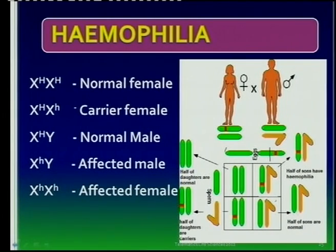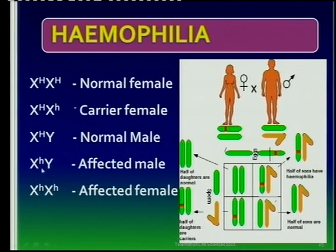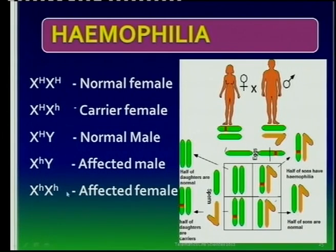And here we have the affected male. He's affected — he's a bleeder. Why is he a bleeder? He only has one X chromosome, and this is what you need to explain in the exam. Why is this man a hemophiliac? It's because he only gets one allele from his mother, and since there is not another X chromosome with a normal allele, it can't mask the presence of this one, and that is why he is a sufferer.